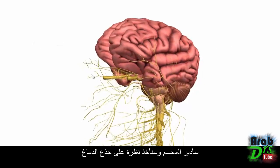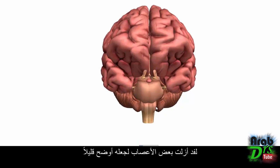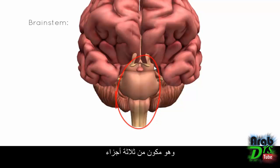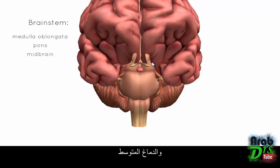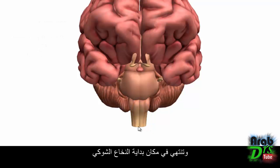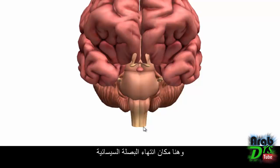I'm going to rotate it around and take a look at the brainstem. I've just removed some of the nerves to make it a bit clearer. The brainstem is this bit here and it consists of three parts: the medulla oblongata, the pons, and the midbrain. The medulla oblongata is most distal or most inferior — it starts at the end of the pons and ends where the spinal cord begins, at the foramen magnum.